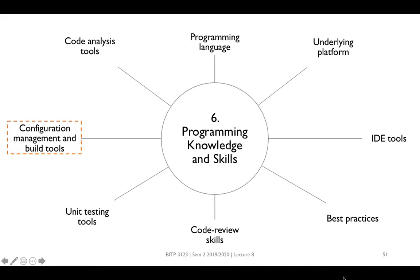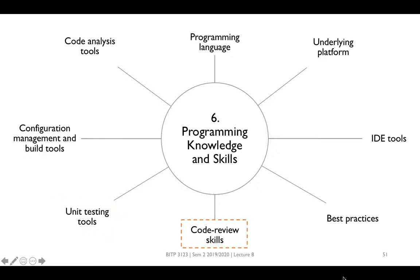A programmer must know how to perform unit testing on his code using the IDE adopted by the team. Finally, all source codes in the EA project must be reviewed. Skills to review source code must be acquired by the programmer for maintainable code. Codes should also be tuned to improve performance.